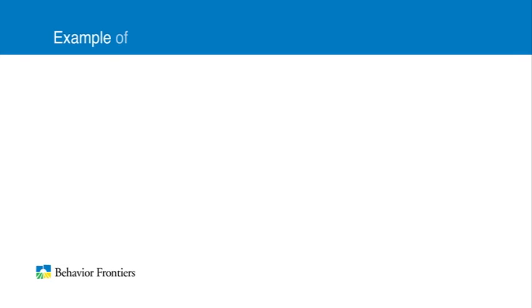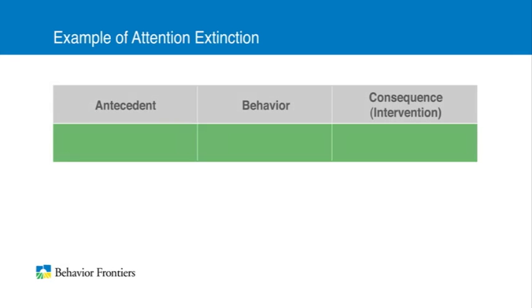Let's go over an example of how to use attention extinction. In a situation in which two adults are talking and a student begins to yell, the way to do attention extinction would be for the adults to ignore the student's yelling and to keep talking to each other.